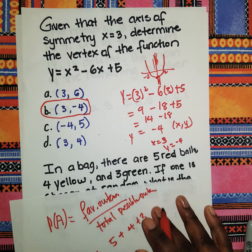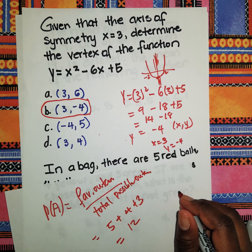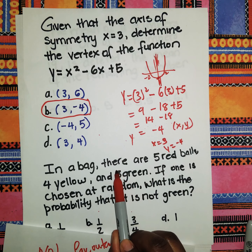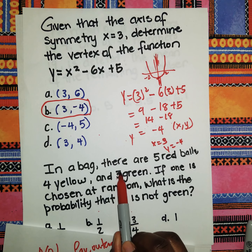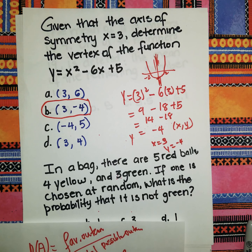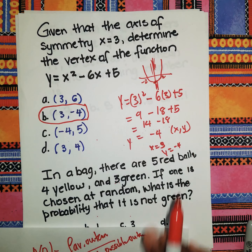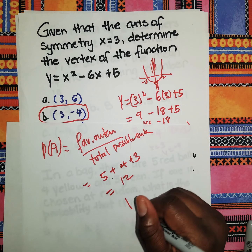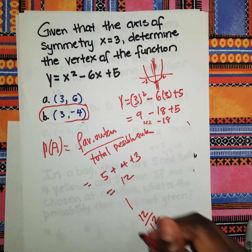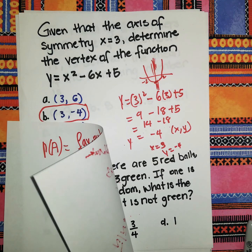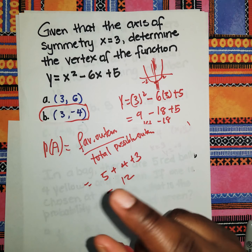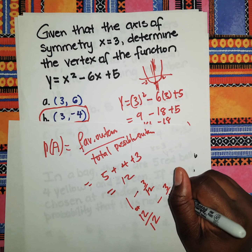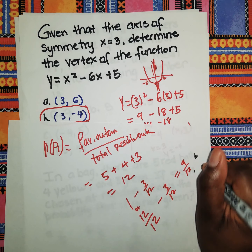The total possible outcomes: 5 + 4 + 3 = 12. So we have 12 possible outcomes. The probability of green is 3/12. The probability of not green is 1 − 3/12 = 12/12 − 3/12 = 9/12.